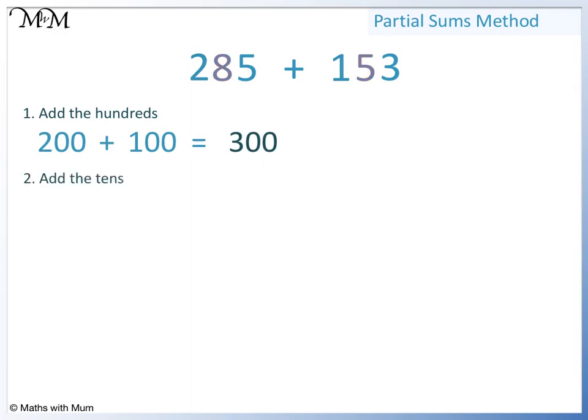Next we add the tens. 80 plus 50 equals 130. Then we add the ones. 5 plus 3 equals 8.